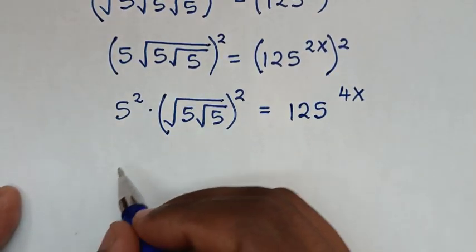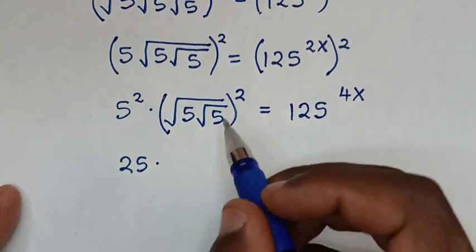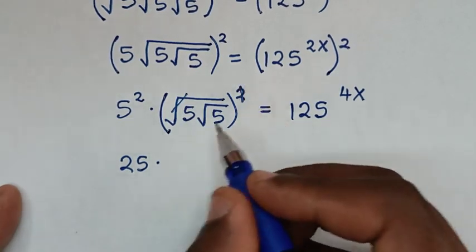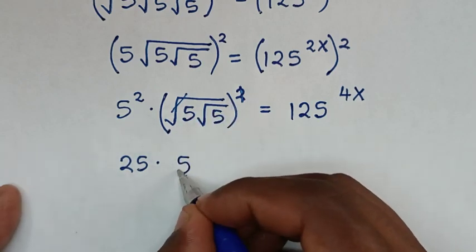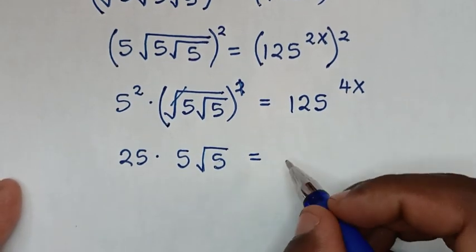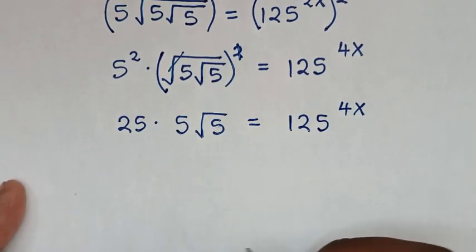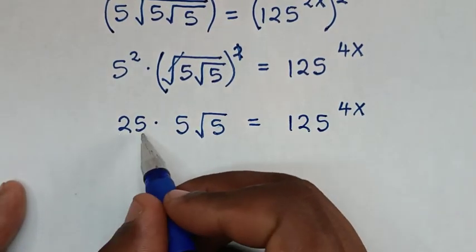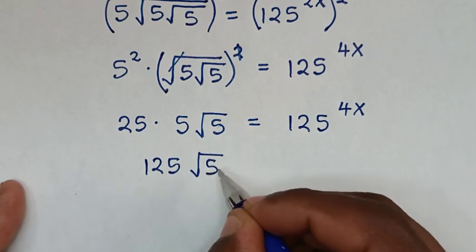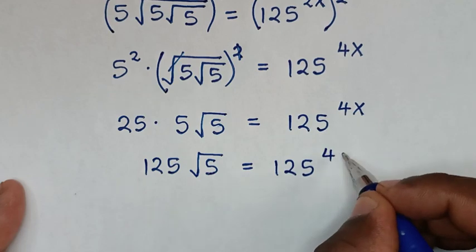In the next step, the square cancels the square root, giving us 5 times 5·√5, equal to 125^(4x). Then 25 times 5 is 125, so we have 125·√5 = 125^(4x).